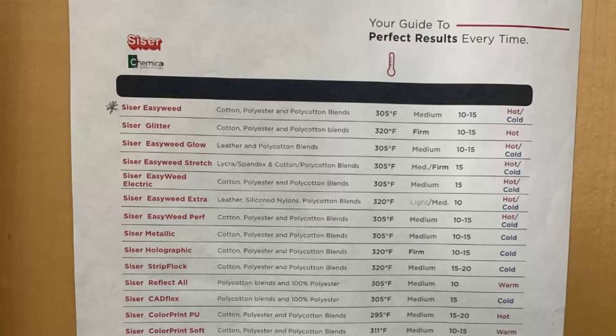We use Siser EasyWeed and its suggested temperature is 305 and time for pressing is between 10 and 15 seconds. You can experiment with temperatures and time length based on the fabric you are using.